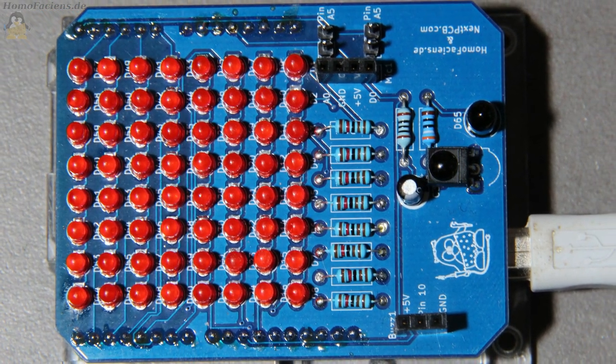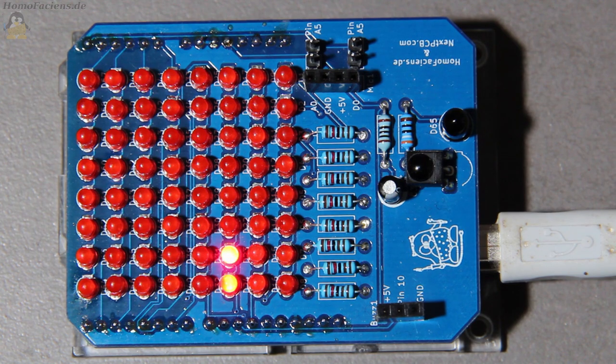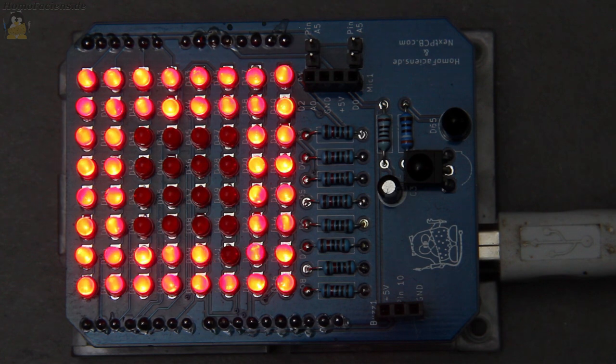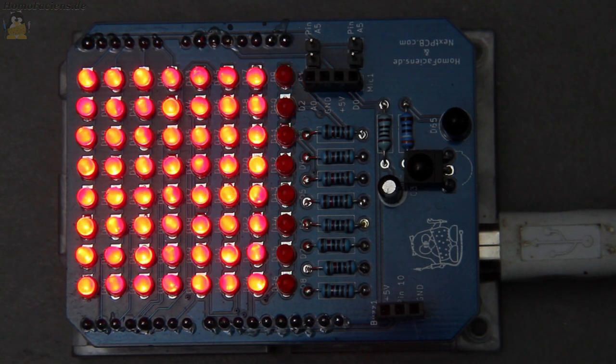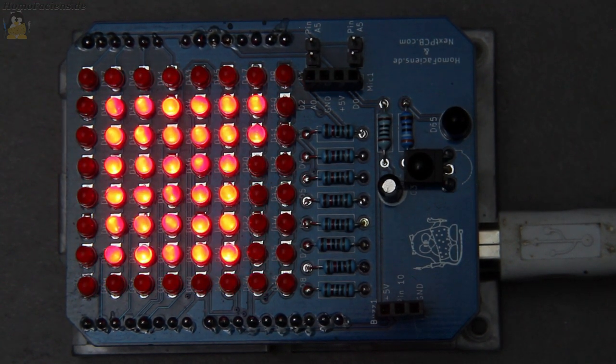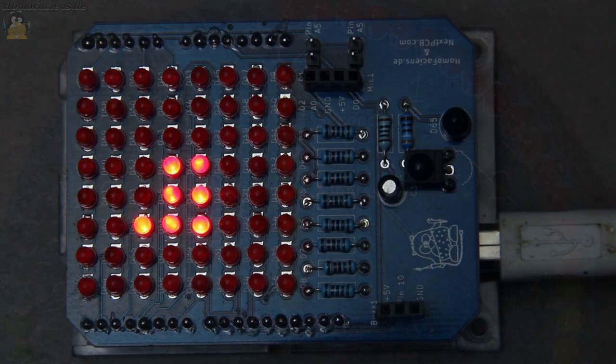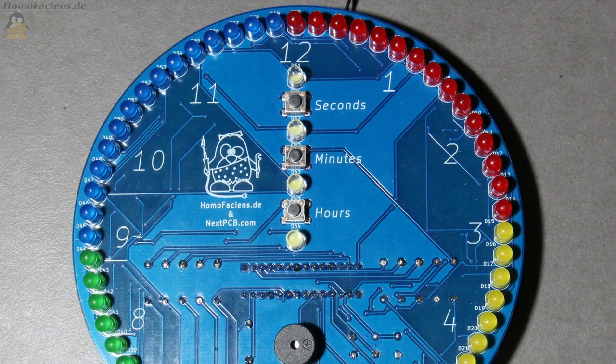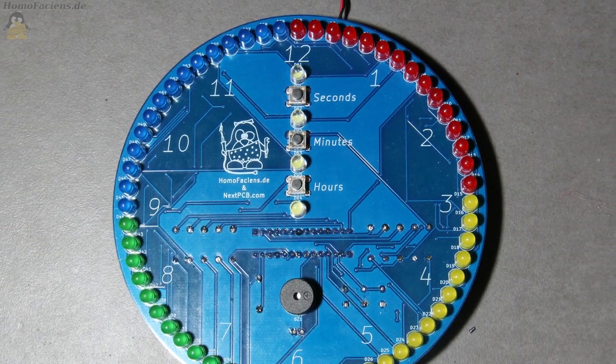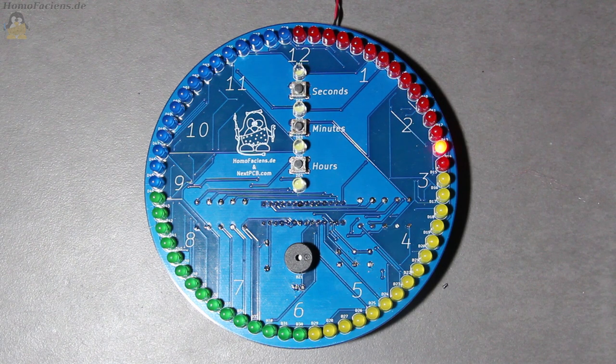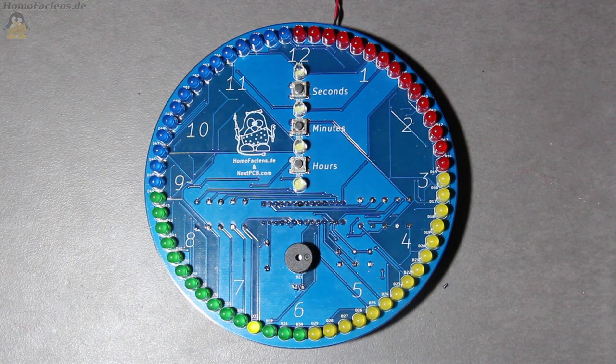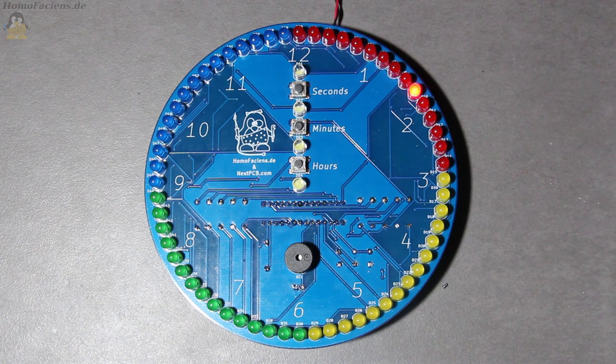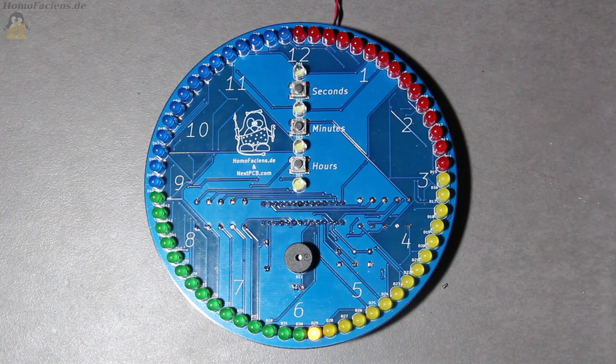With 3mm LEDs you get a more compact board that can be used as a shield for an Arduino Uno. With the help of multiplexing, any graphics can be displayed on the mini screen. The LEDs do not have to be arranged as a square matrix. Professional circuit board manufacturer makes arranging 60 LEDs in a circle a child's play. The result is a very special LED clock.